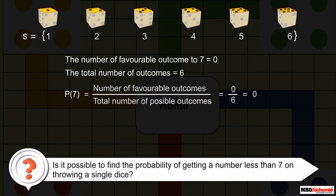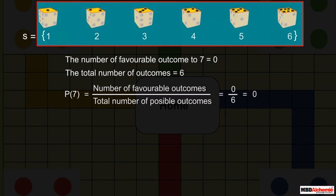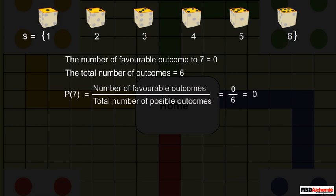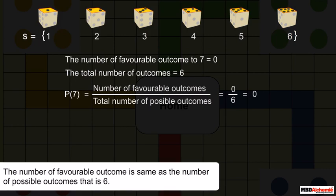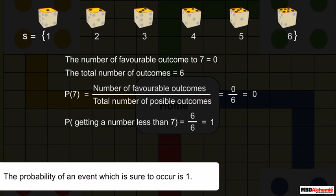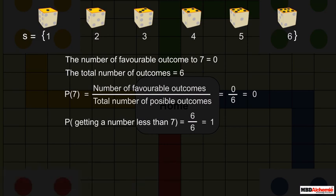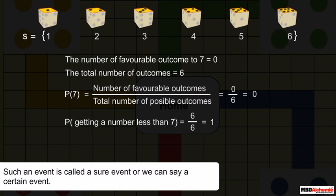Now, is it possible to find the probability of getting a number less than 7 on throwing a single dice? Yes. Since every face of a dice is marked with a number less than 7, the number of favorable outcomes is the same as the number of possible outcomes, that is 6. So the probability of getting a number less than 7 is 6 upon 6, which equals 1. The probability of an event which is sure to occur is 1. Such an event is called a sure event or a certain event.